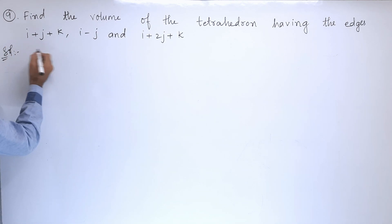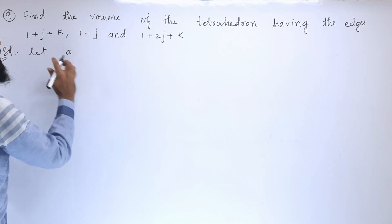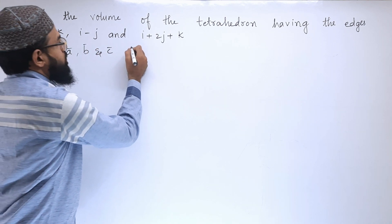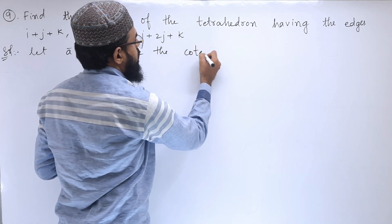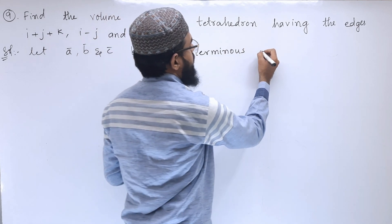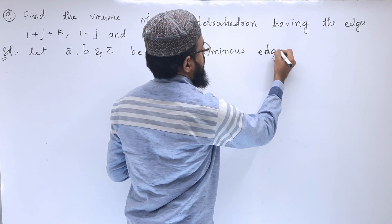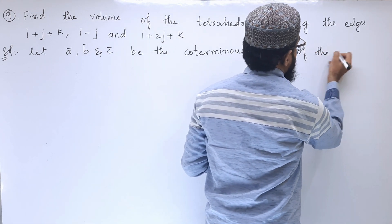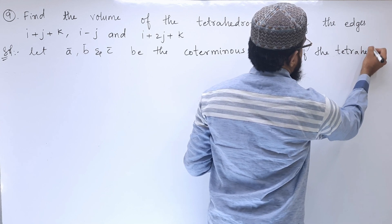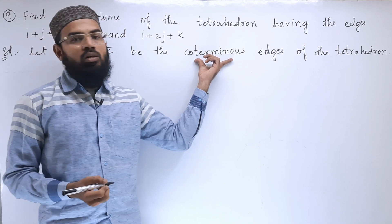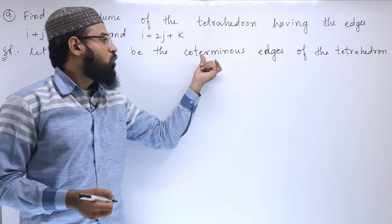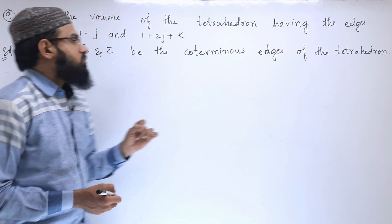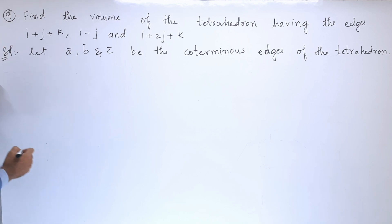Let us start the solution. Let these three vectors be A, B, and C — the coterminous edges of the tetrahedron. Coterminous means: 'co' means common, 'terminus' means terminal point, the ending point. So vectors having the same common terminal point are called coterminous edges of a tetrahedron.